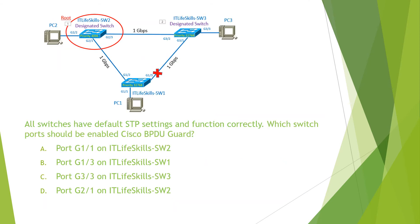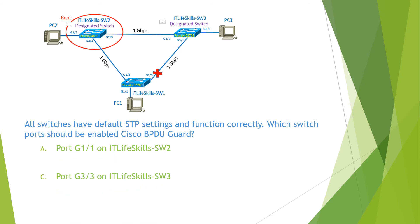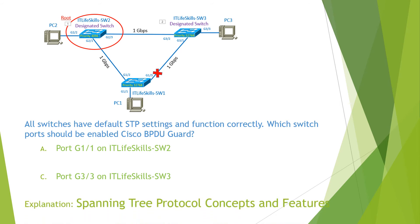The question reads: all switches have default STP settings and function correctly — which switch ports should be enabled with Cisco PortFast? The ports that should have PortFast enabled are the ports connected to hosts. Therefore, the answers for this question are A and C. You can find the detailed explanation in the video: spanning tree protocol concepts and features.